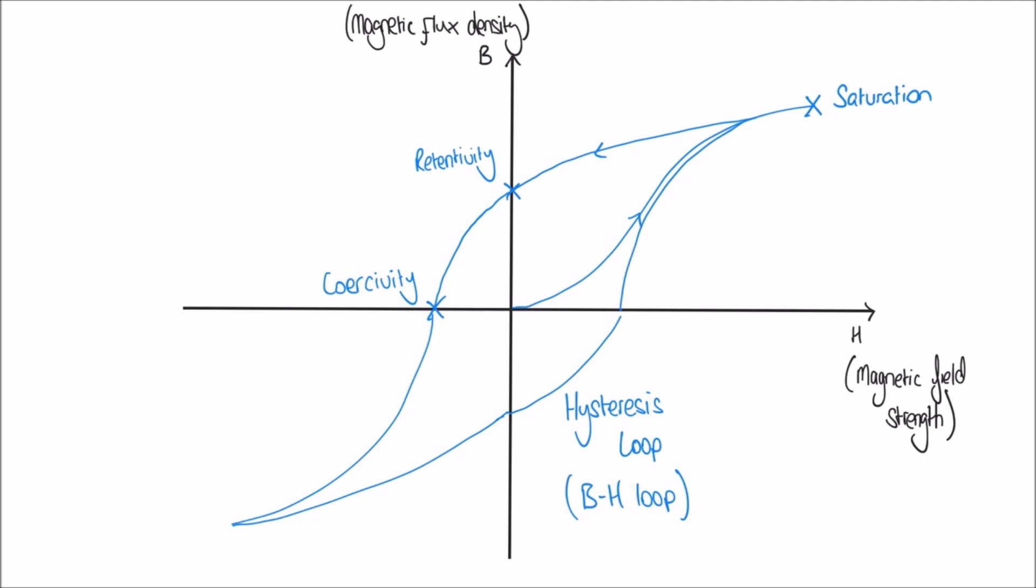And so it's often important when selecting a material that's going to form the core of the coil, that we find a material that has very low retentivity and very low coercivity. Because we don't want to have to fight against the retained magnetic flux density of the original saturation when we're moving to the negative direction.